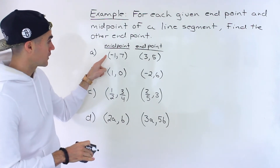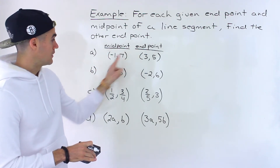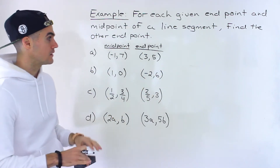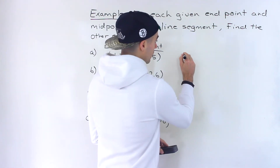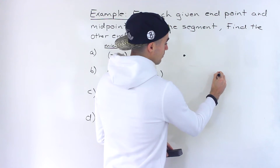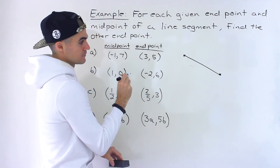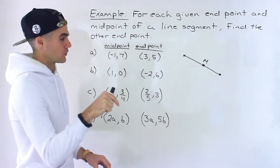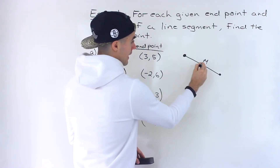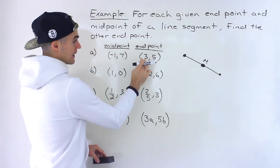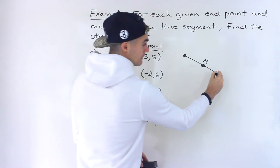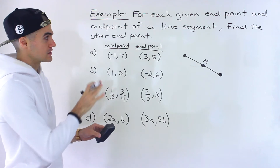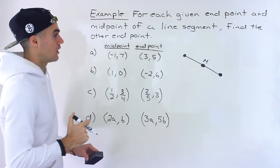Notice in Part A we're given the midpoint of a line segment and an endpoint, and we have to find the other endpoints. This question is a little different. Before, we were given the endpoints of a line segment and had to find the midpoint. Here, we're given one endpoint and the midpoint, and we have to find the other endpoint. You've got to read these carefully because this can come up on your test.